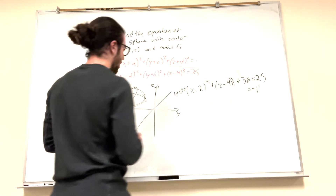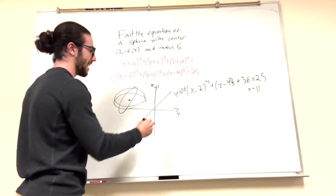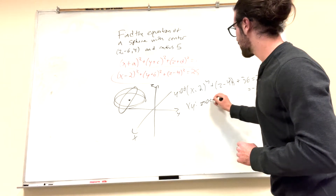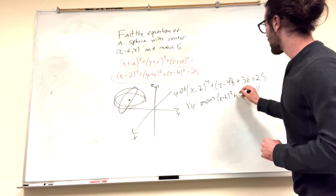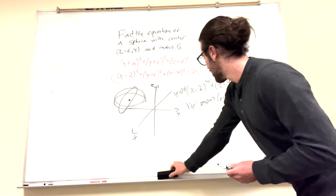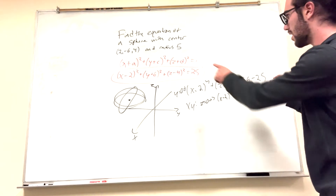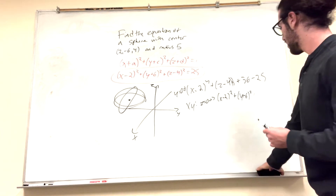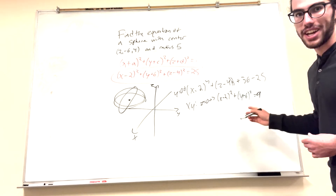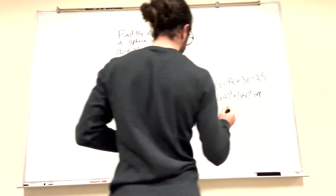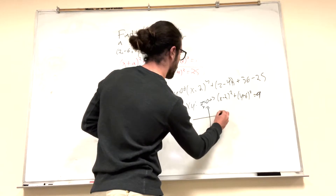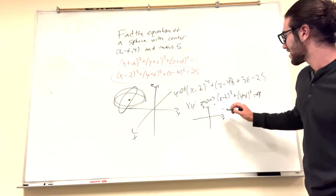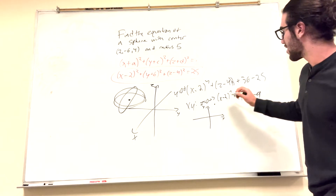But we can do this for the other planes too. For the xy plane, z is equal to 0. So we get (x minus 2) squared plus (y plus 6) squared plus 16 equals 25. Moving 16 to the other side, we get equals 9. This is the equation of a circle. Let's try this out — imagining we are on the xy plane.